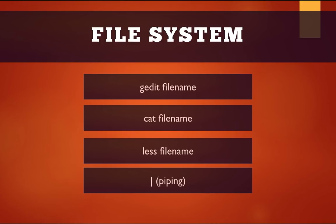The less command is used when a file is large and cannot fit on the entire screen — it lets you go through the file one line at a time. Piping: whenever you type a command and add a pipe symbol, the result of that command is passed to whatever comes after the pipe. This will become clear in the demo we're about to do.